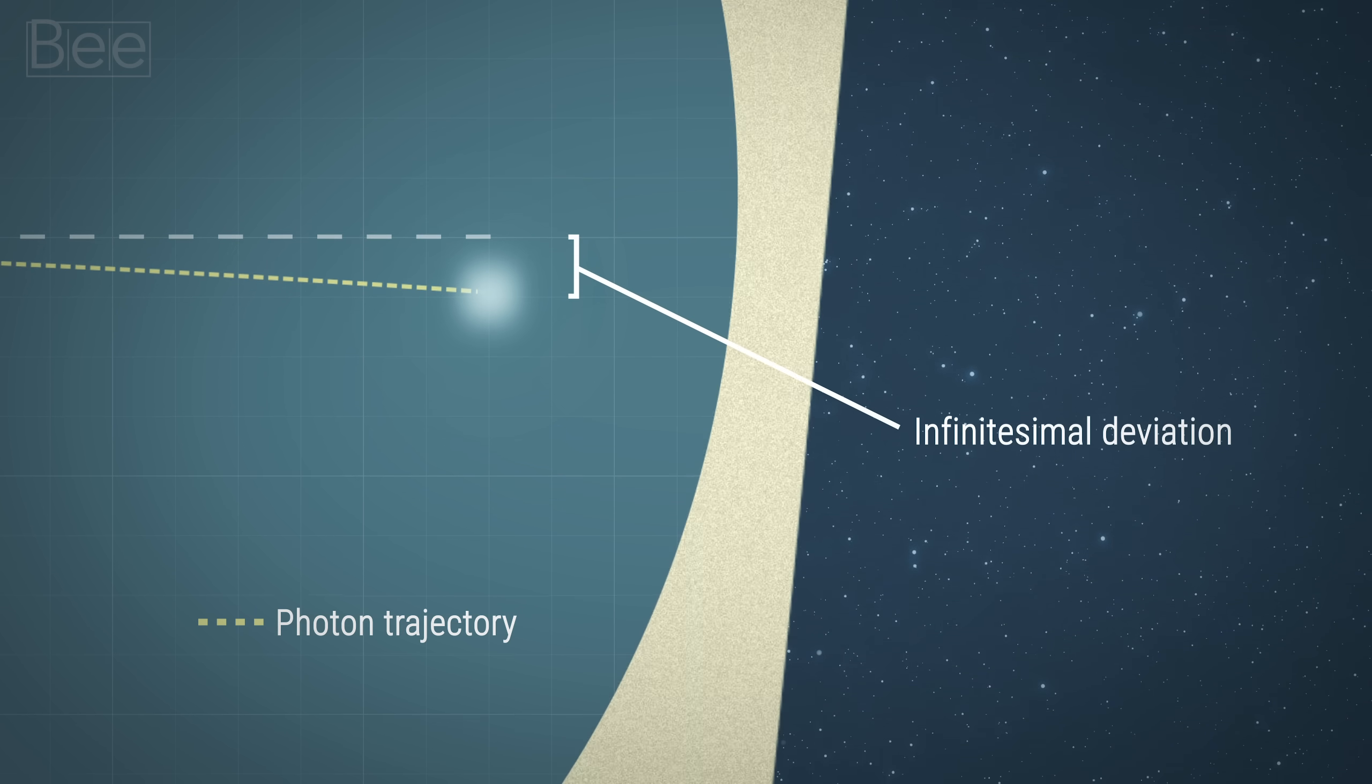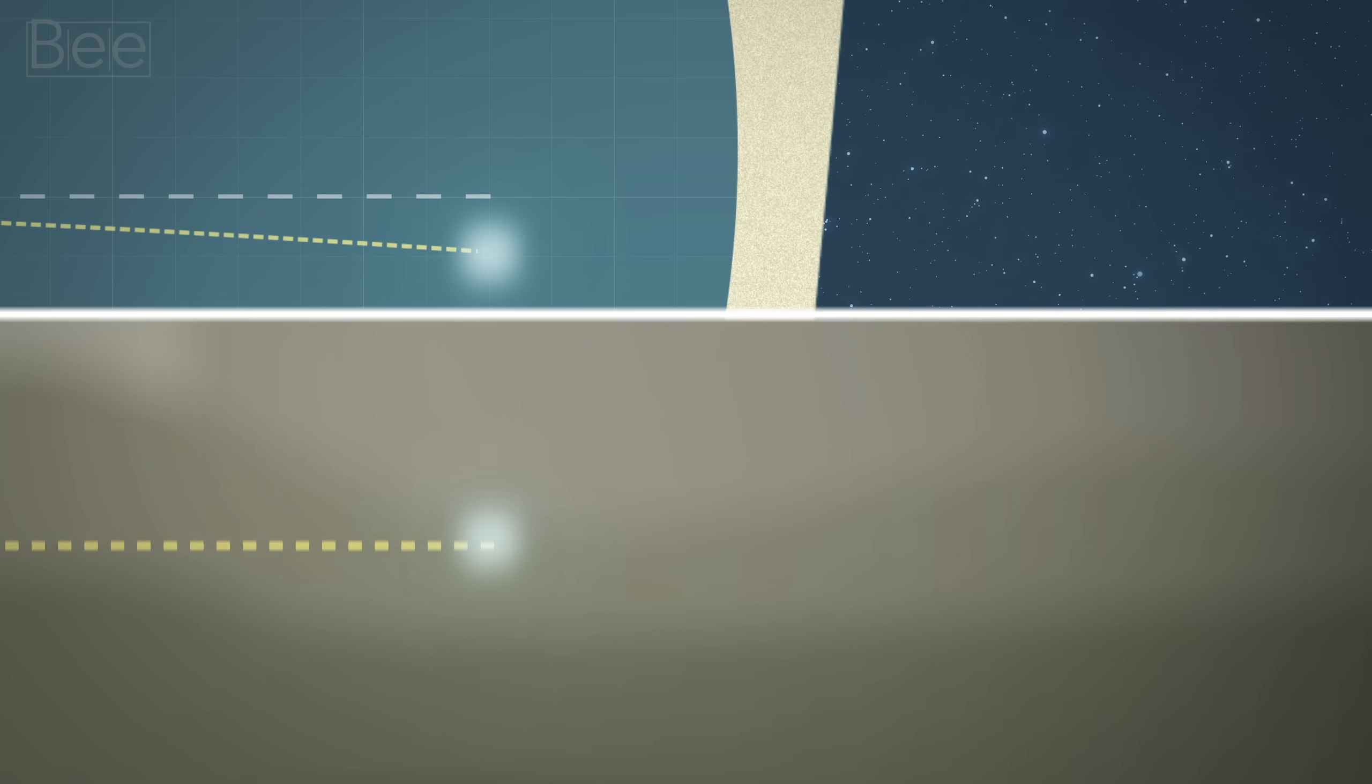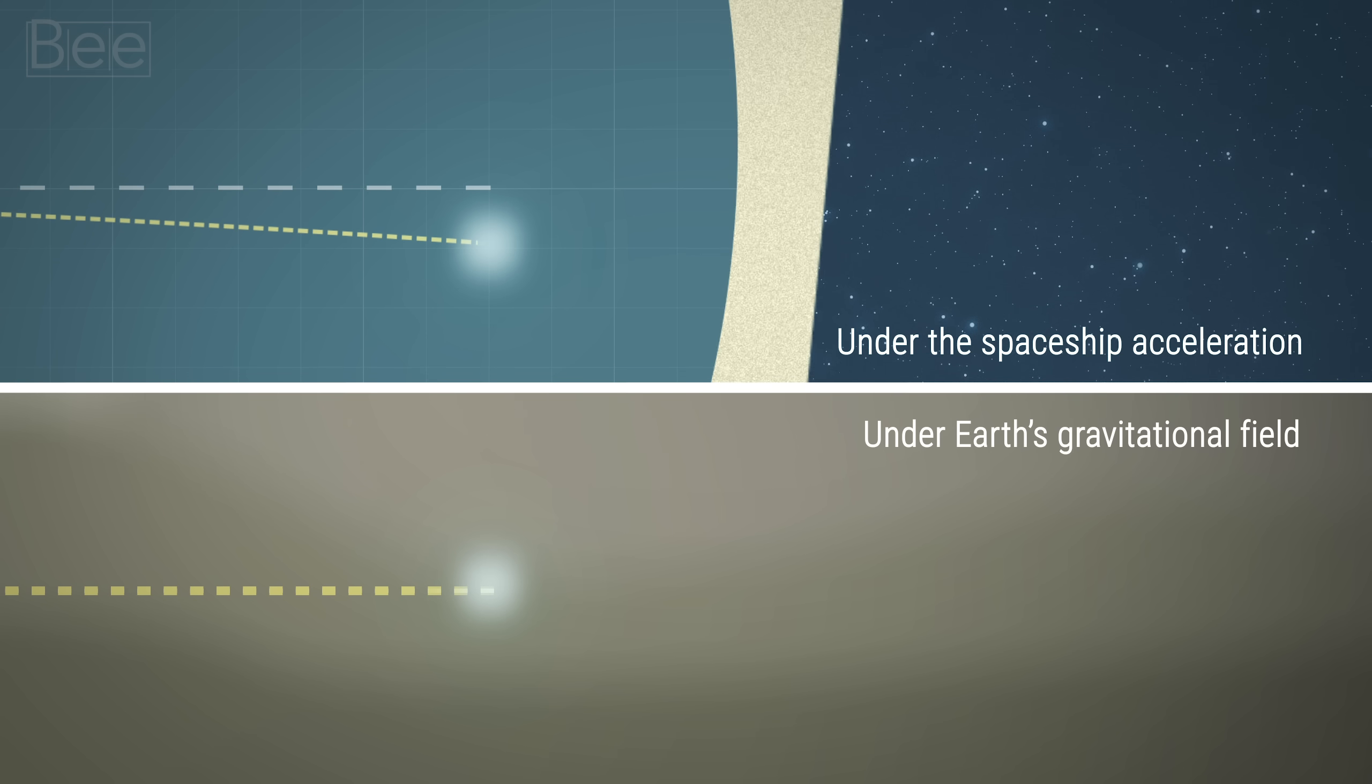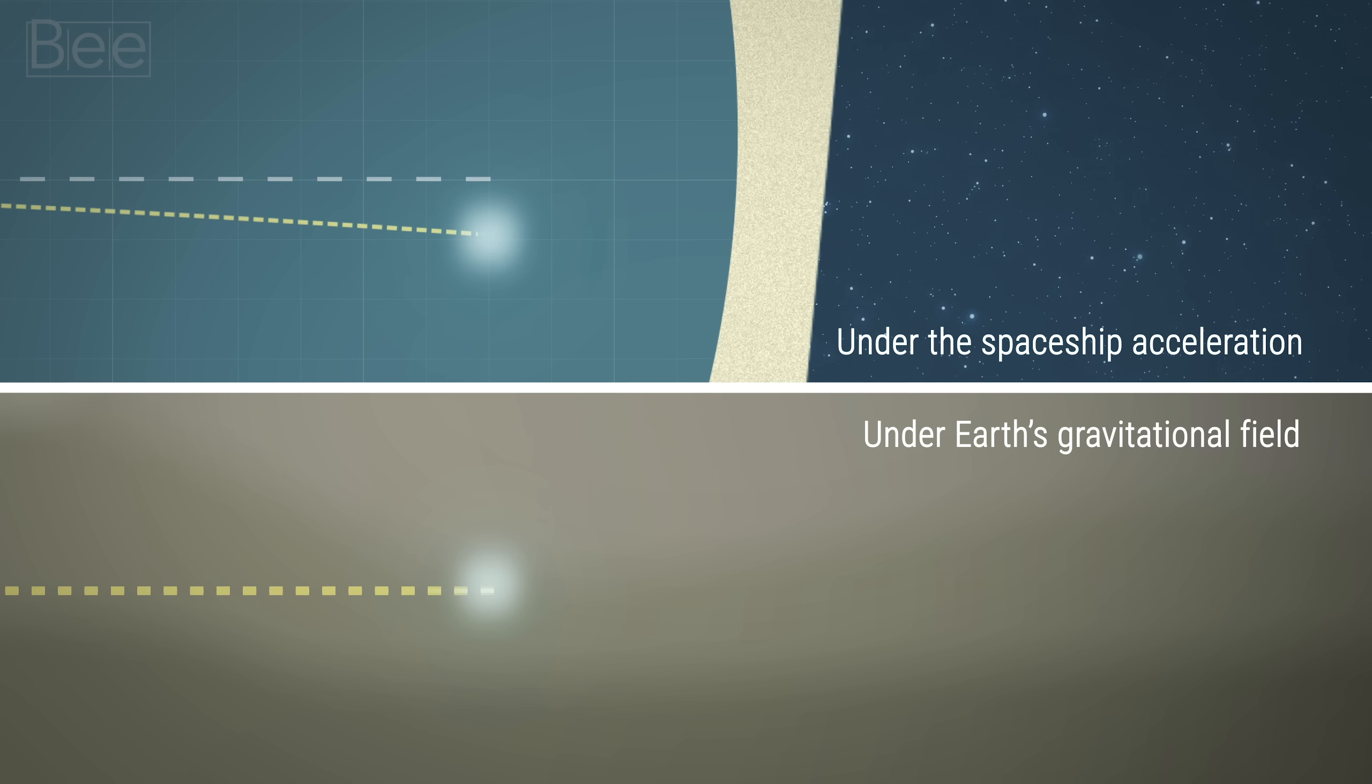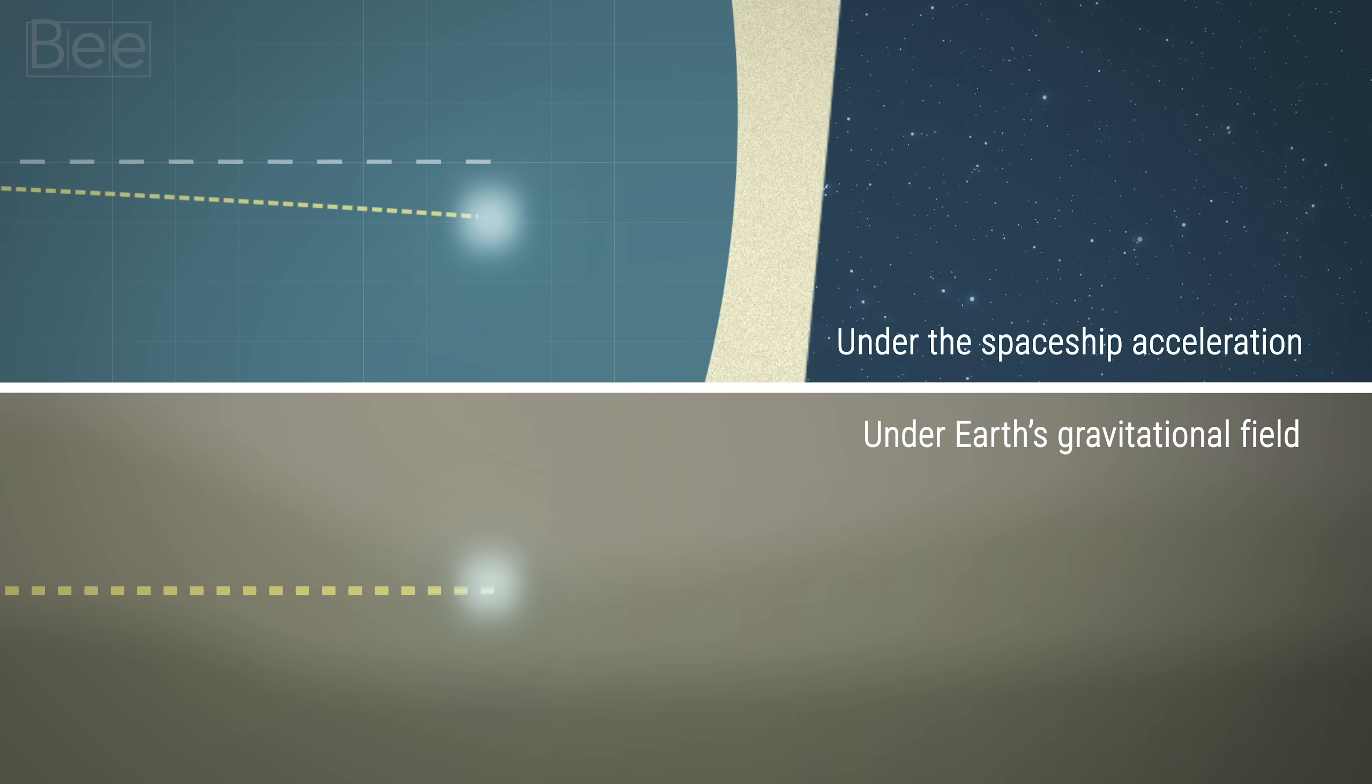But this principle only applied in space. When he thought about the same experiment on Earth, the light would appear to be straight. Of course, these two scenarios only happened in his brain. Let's just take a brief moment to appreciate how brilliant he is to be able to conduct that experiment, all of that, in his brain.